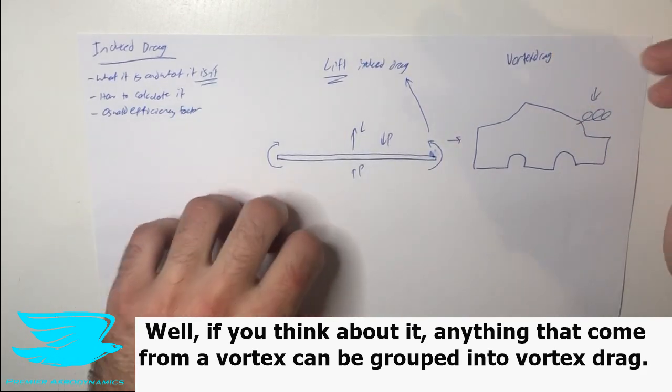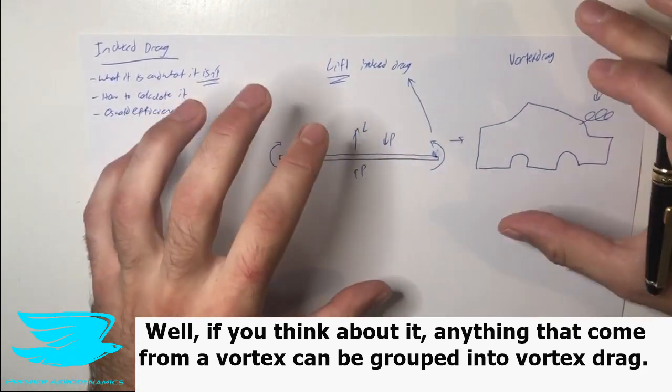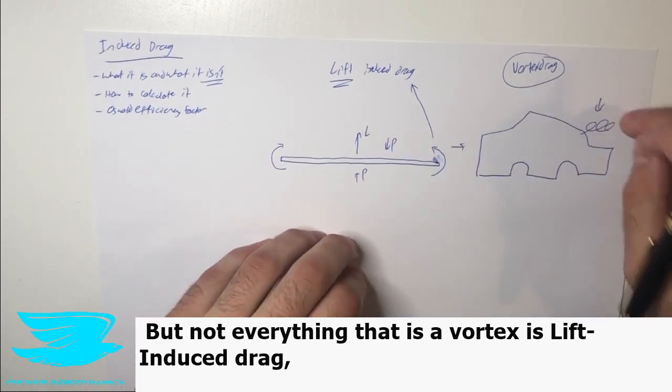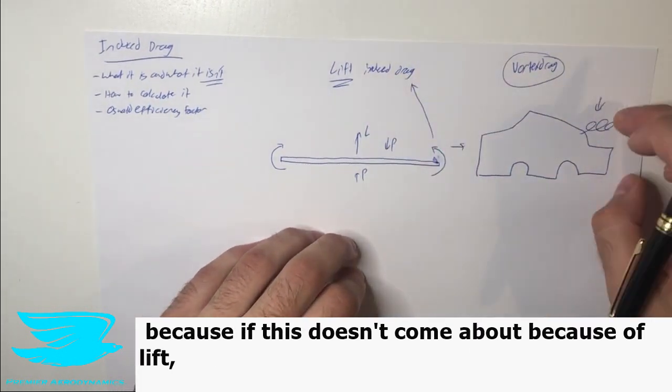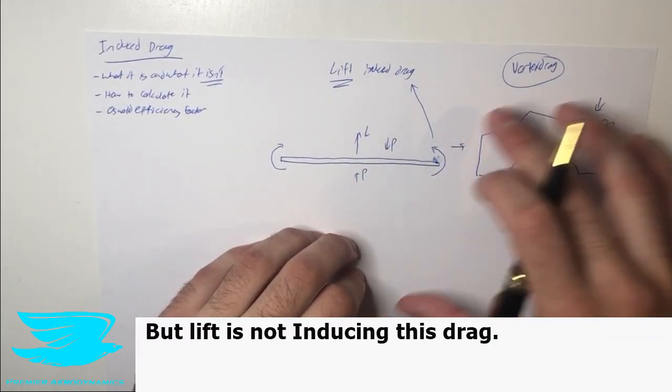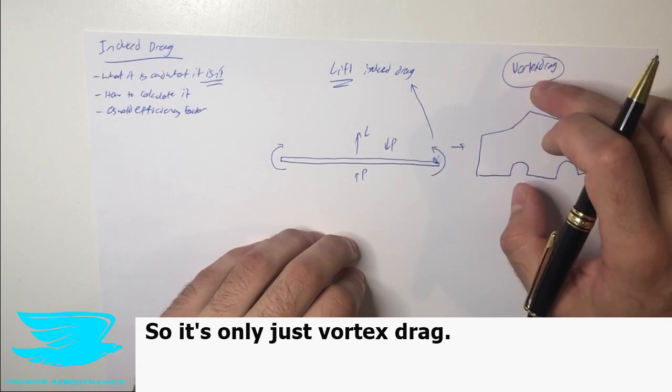Well, if you think about it, anything that comes from a vortex can be grouped into vortex drag. But not everything that is a vortex is lift induced drag, because if this doesn't come about because of lift, then it's technically not lift induced drag. The lift is not induced in this drag. So it's only just vortex drag.